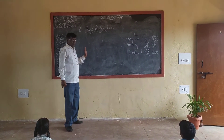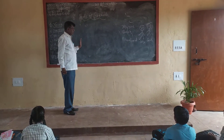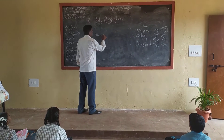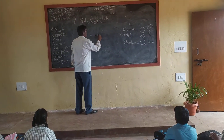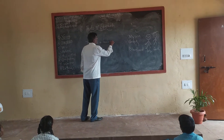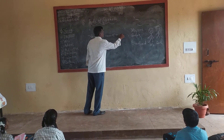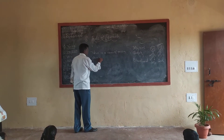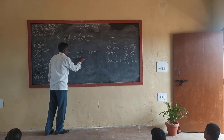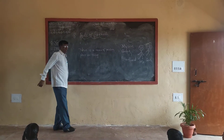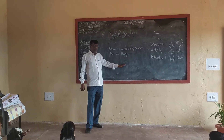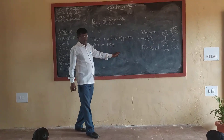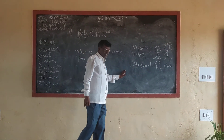Today, a noun is a name of person, place, or thing. This noun is a name of person, place, or thing. This is also known as the subject in a sentence.